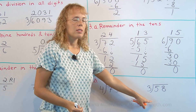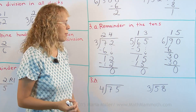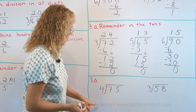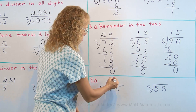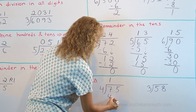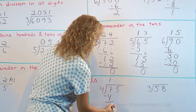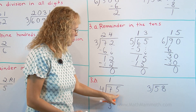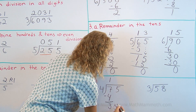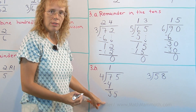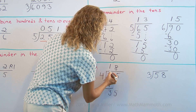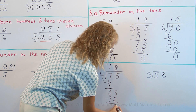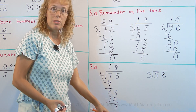In these examples, the same thing happens except there is a remainder in the ones. For example, 4 goes into 7 one time; 1 times 4 is 4. Subtract to find the remainder of 3 tens. We add the 5 ones to it and think: 4 goes into 35 eight times. 8 times 4 is 32, subtract, and 3 is the remainder. The answer is 18 remainder 3.